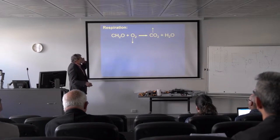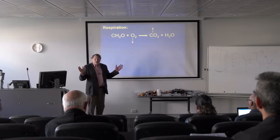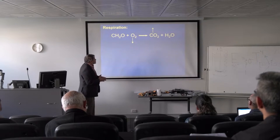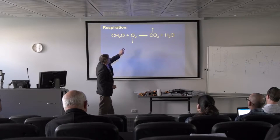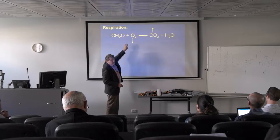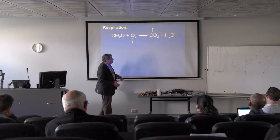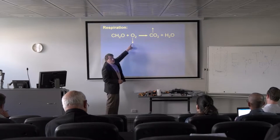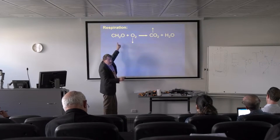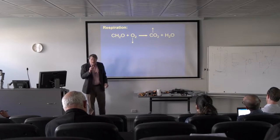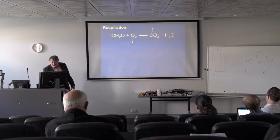Just a review — I tell students this is the most important equation in the world to a biologist. This is respiration going one way and photosynthesis going the other. If we can measure the rate of oxygen depletion or the rate of CO2 buildup, we know the metabolic rate. One mole of oxygen disappearing means one mole of carbon has been metabolized in respiration, so we can precisely calculate metabolism using either oxygen or CO2.